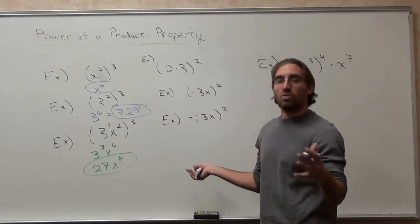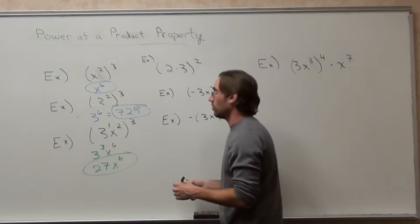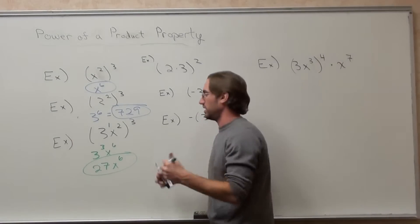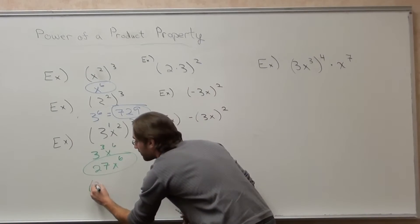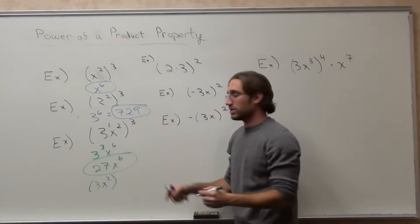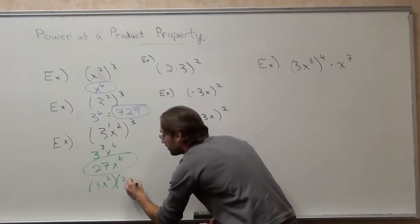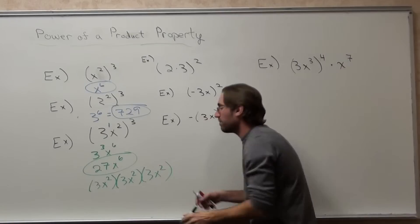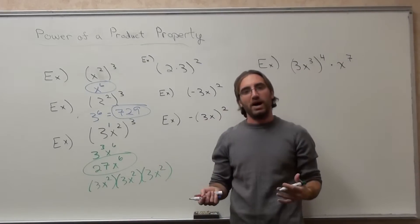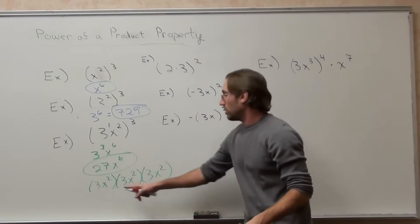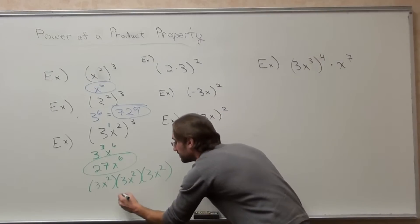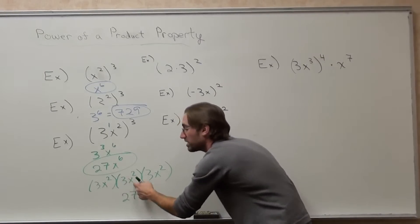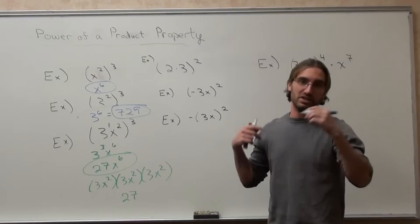If you want the reason why that works, I'll go ahead and show you. I can write this out 3x squared 3 times. I wouldn't recommend doing that. I would recommend learning the properties because it is actually shorter. 3 times 3 times 3 is 27.